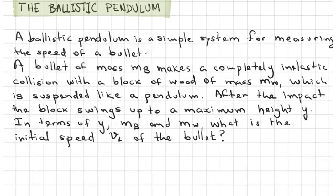Hello guys, welcome to a new video. In this opportunity we want to talk about the ballistic pendulum. The problem says: a ballistic pendulum is a simple system for measuring the speed of a bullet. A bullet of mass Mb makes a completely inelastic collision with a block of wood of mass Mw, which is suspended like a pendulum. After the impact, the block swings up to a maximum height Y. In terms of Y, Mb, and Mw, what is the initial speed of the bullet?